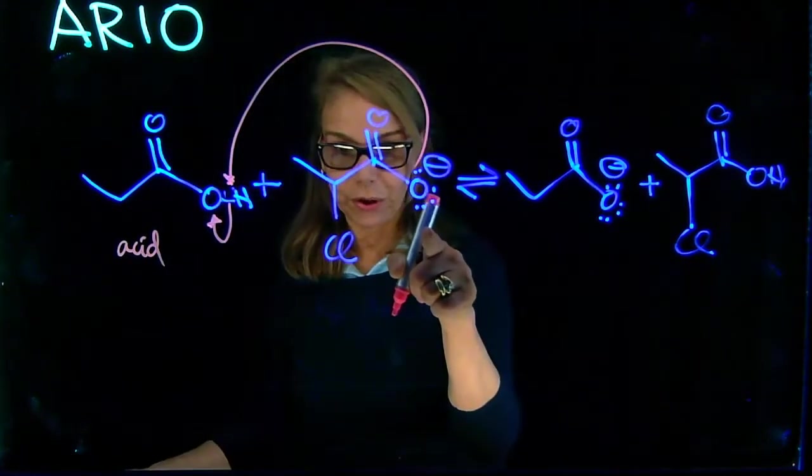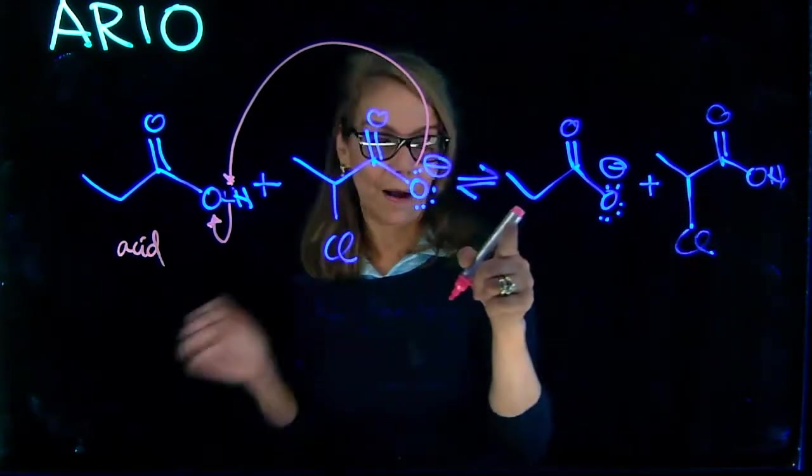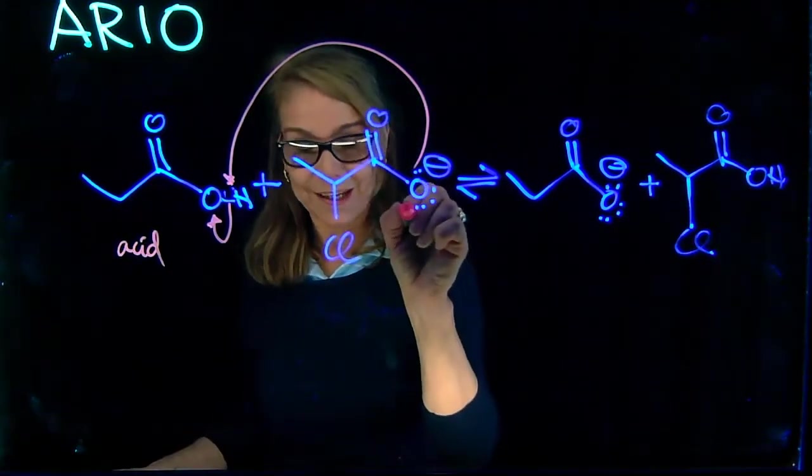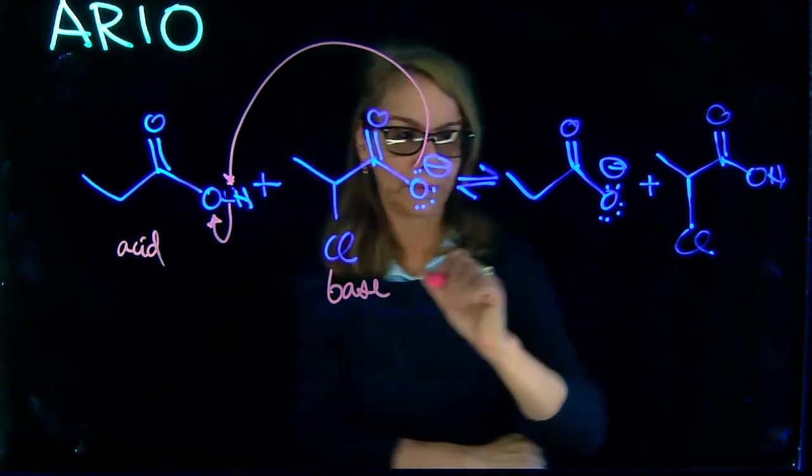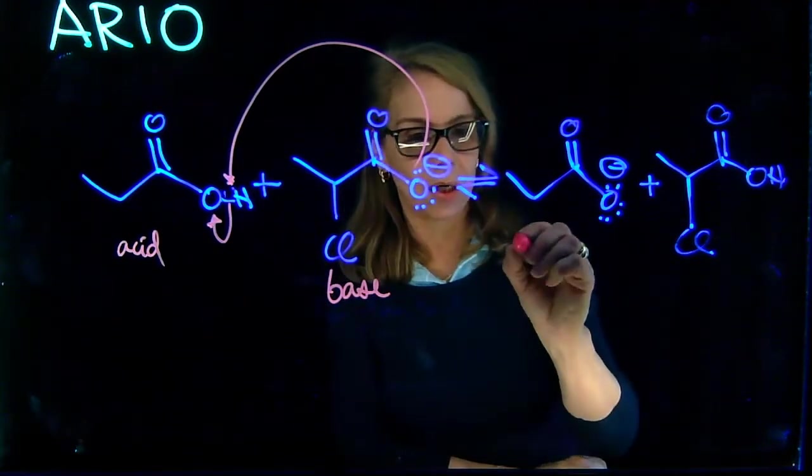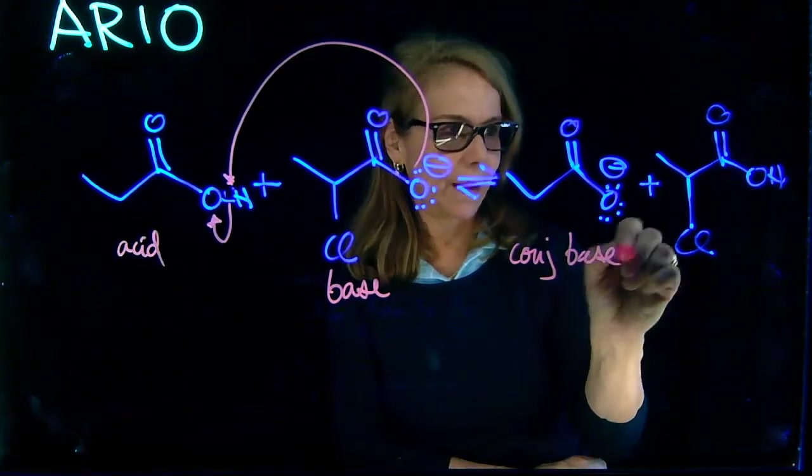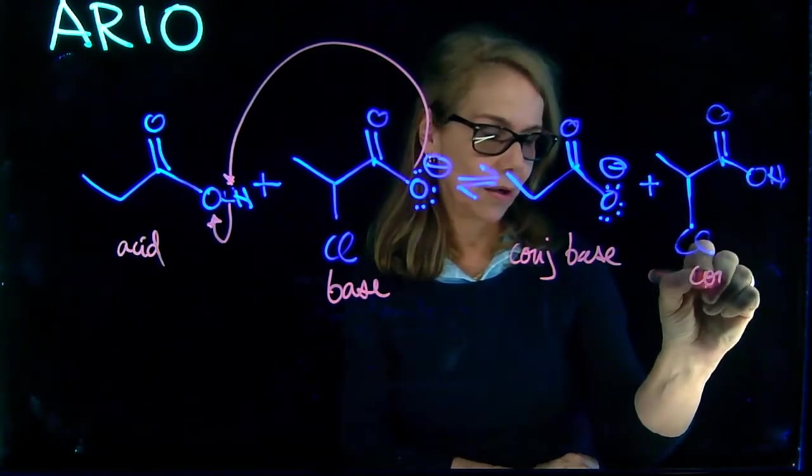This molecule got a proton, so it's a proton acceptor, and this is the product here. Because it's a proton acceptor, this is your base in the Bronsted-Lowry concept. Now this is the acid, this is its conjugate base, and this is the conjugate acid of this molecule.